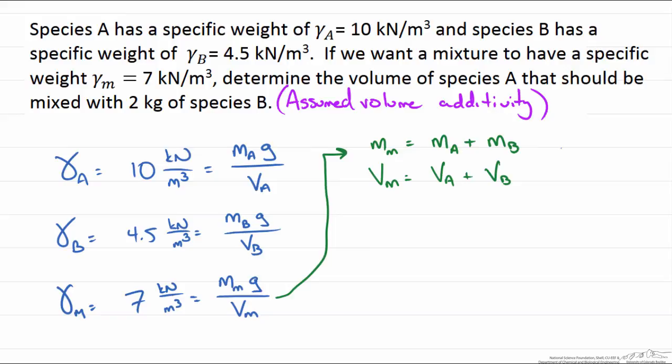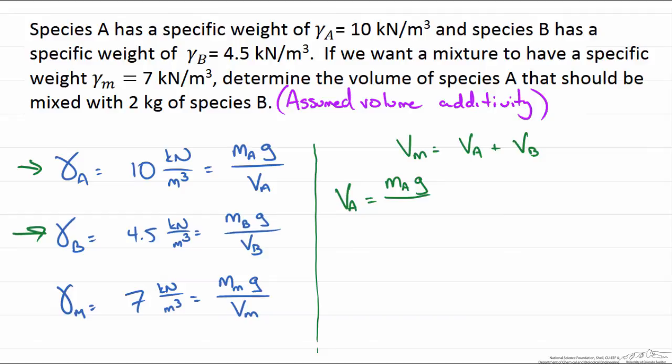So let's take a look at the volumes and rewrite our equations here in terms of the volume of A and the volume of B. We can set this equal to the mass of A times acceleration due to gravity over the specific weight. We can also do the same for B.